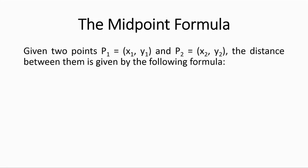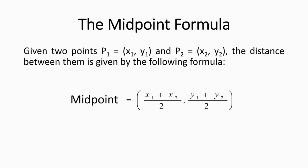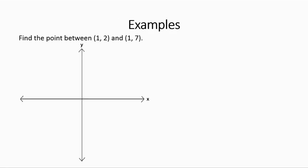Let us look at the midpoint formula. Given two points p sub 1 and p sub 2 with coordinates (x1, y1) and (x2, y2), the midpoint formula gives their midpoint. Let's look at two examples first. Find the midpoint between (1, 2) and (1, 7). The x-coordinate must be 1 since they share the same x.